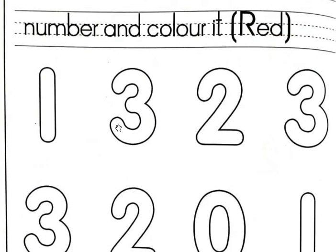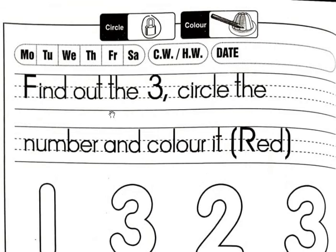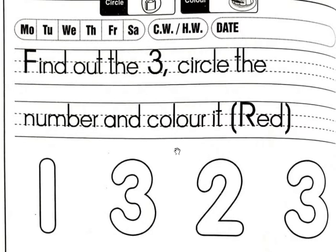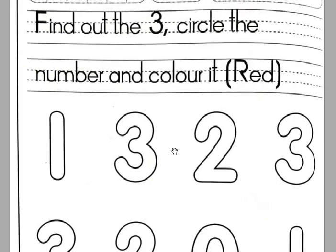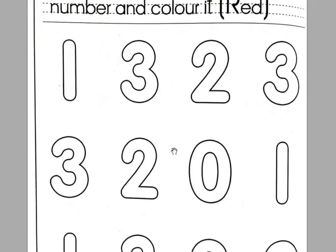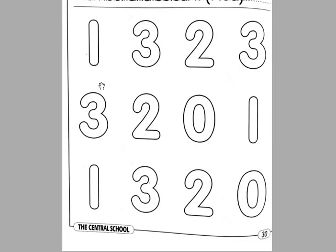This is your workbook page number 30 and the topic is find out the 3, circle the number and color it red. Here they have given you different numbers on page number 30 — numbers like 4, 1, 3, 2, 0, 1 — repeated multiple times.